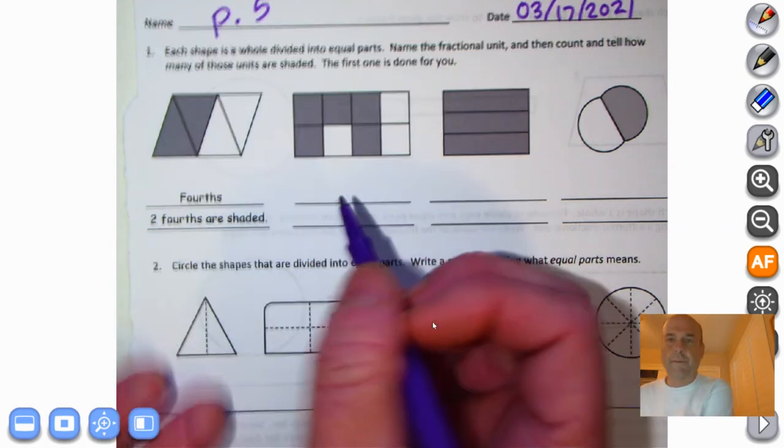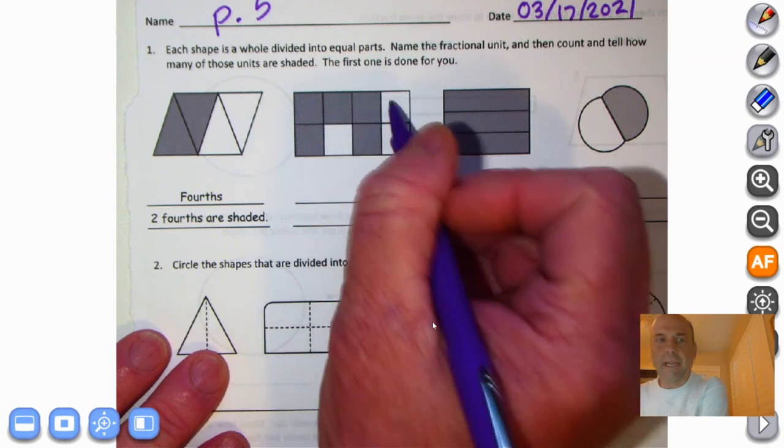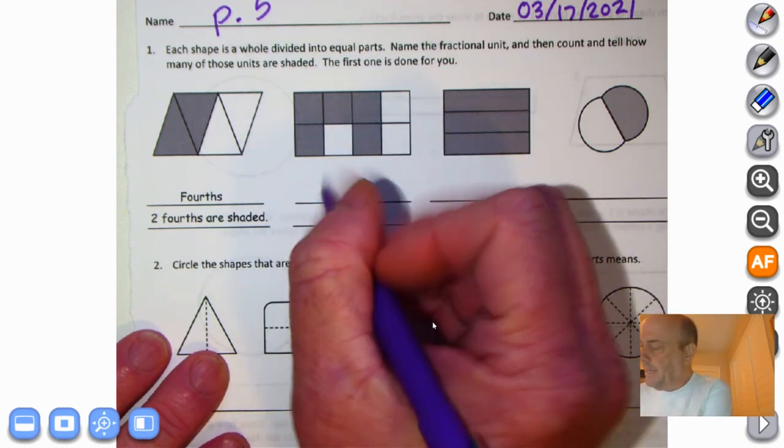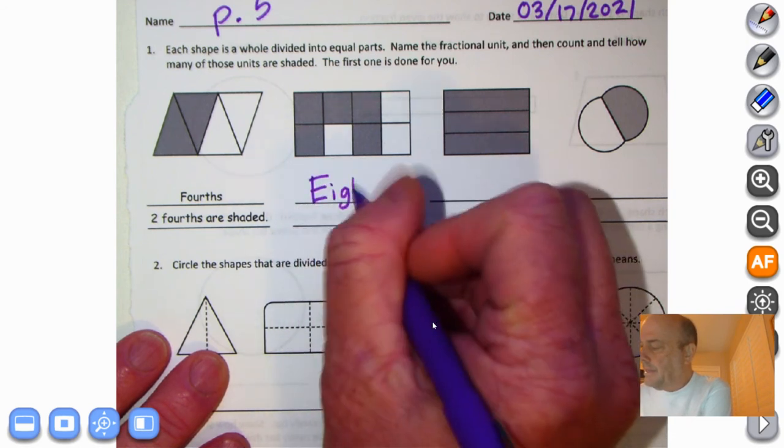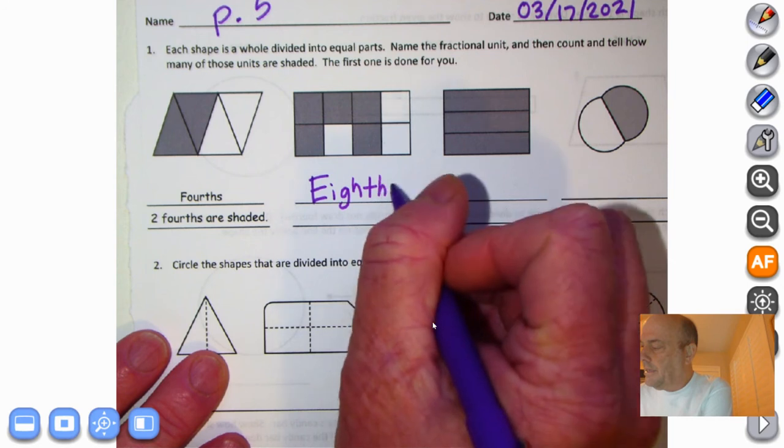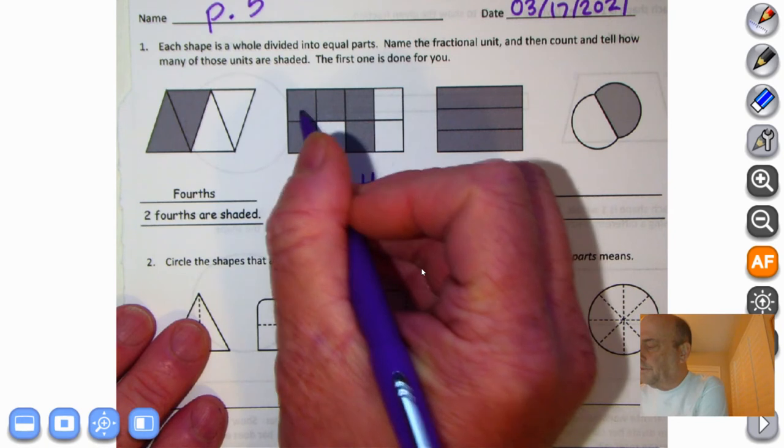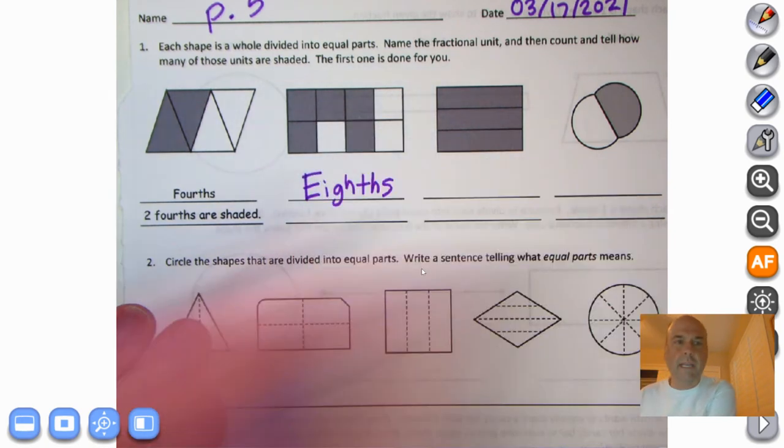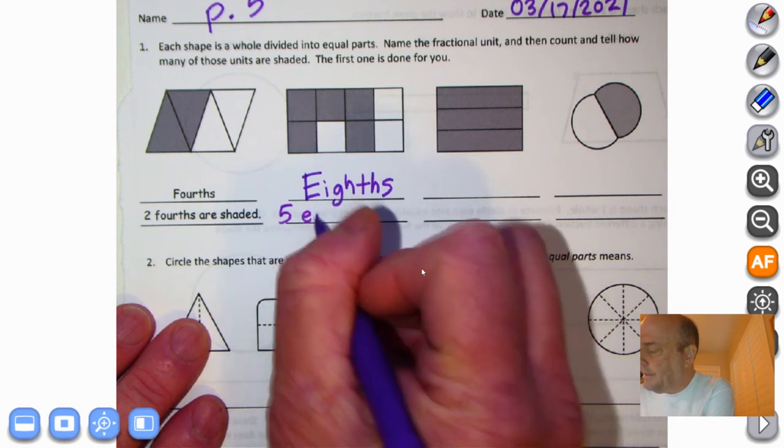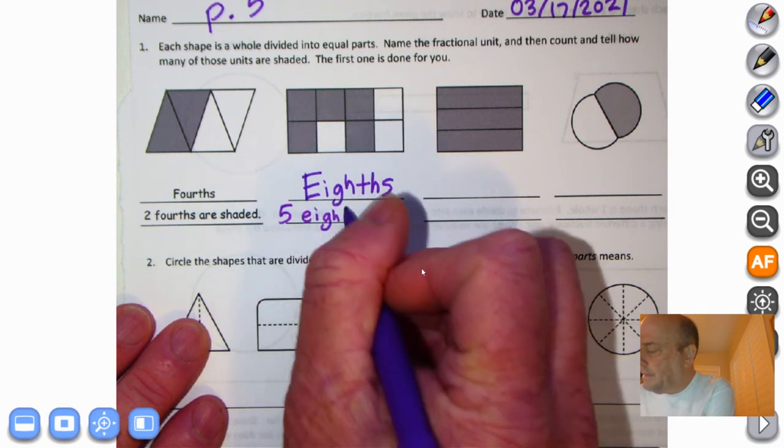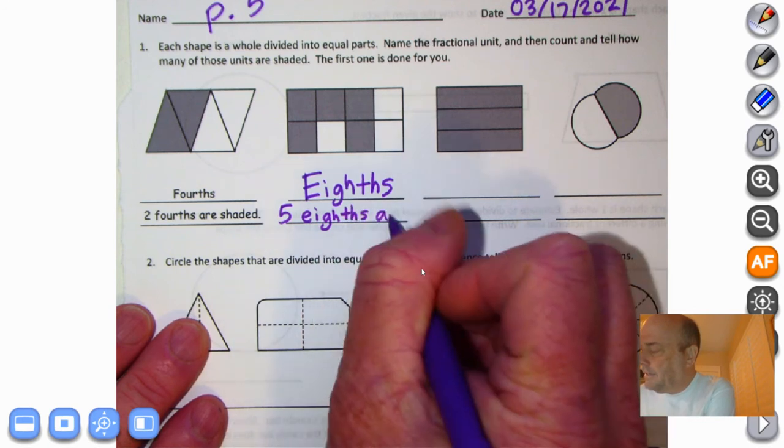Let's try this one over here. One, two, three, four, five, six, seven, eight. These are what we call eighths. How many are shaded? Let's count. One, two, three, four, five. So we could say five eighths are shaded.